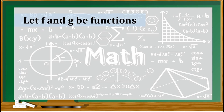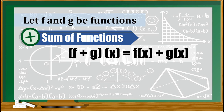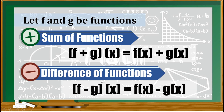Now let us define the four fundamental operations of functions. Let f and g be functions. First, we have the sum of functions: f plus g of x is equivalent to f of x plus g of x, meaning you just have to combine the two given functions by combining similar terms. Second, we have the difference of functions: f minus g of x is equal to f of x minus g of x, so simply subtract similar terms.